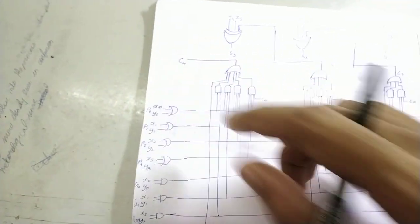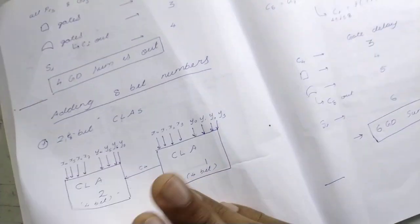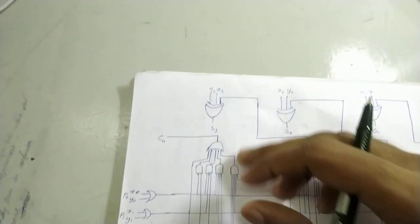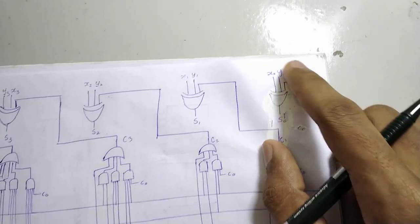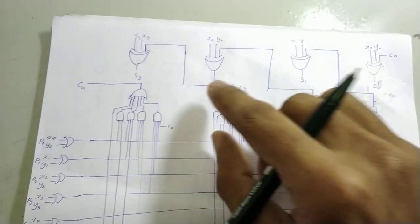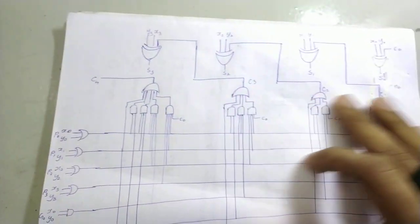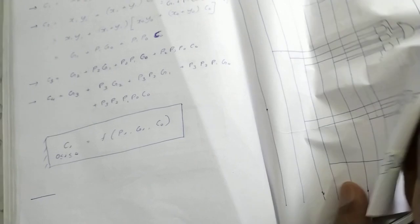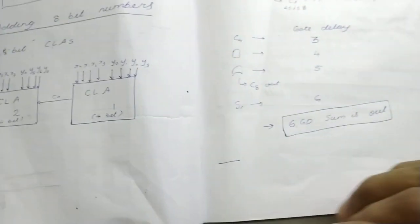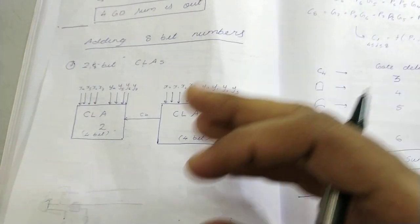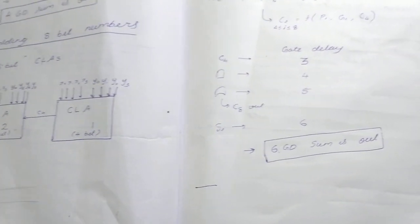Because it's the 2nd CLA, C8 will come out. And what happens in the 6th gate delay, SI will also come out. Because C4 is available here, so, this will be S4, S5, S6 and S7. All these will be available by the 6th gate delay. So, in 6 gate delays, we are able to find out the sum for 2 8-bit numbers. So, that's how the 8-bit carry-look-ahead addition occurs. Thank you.